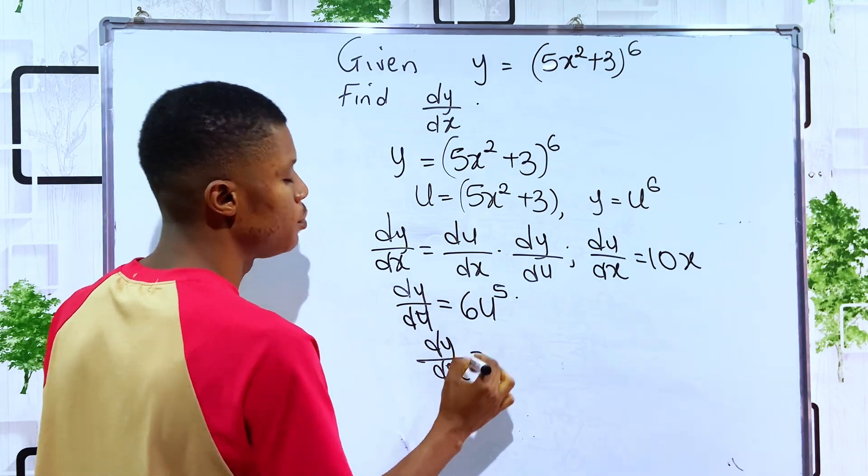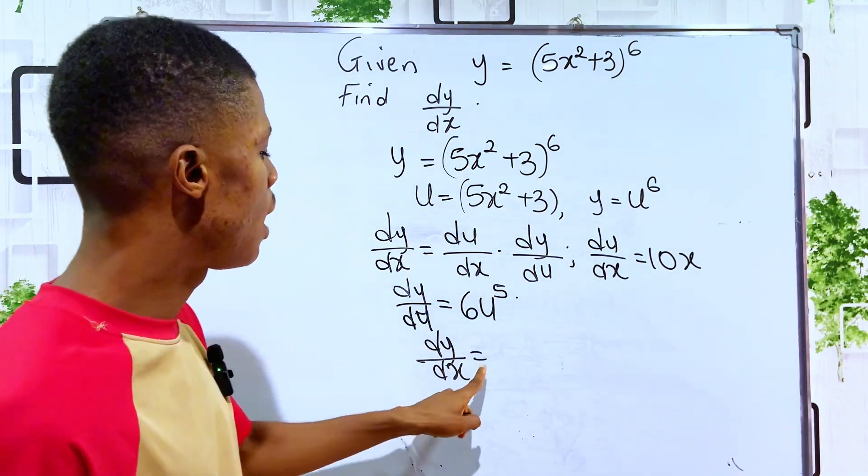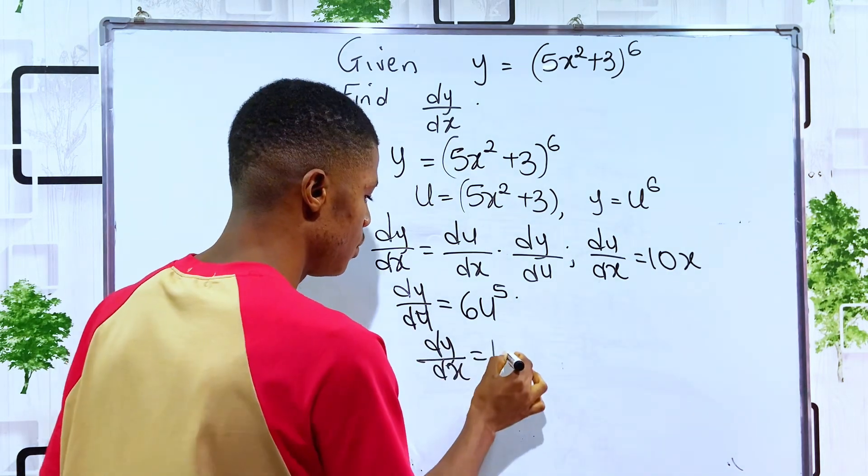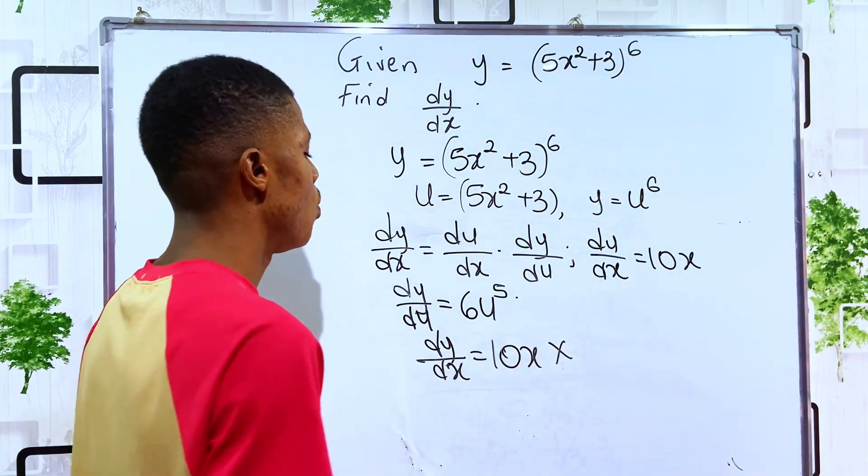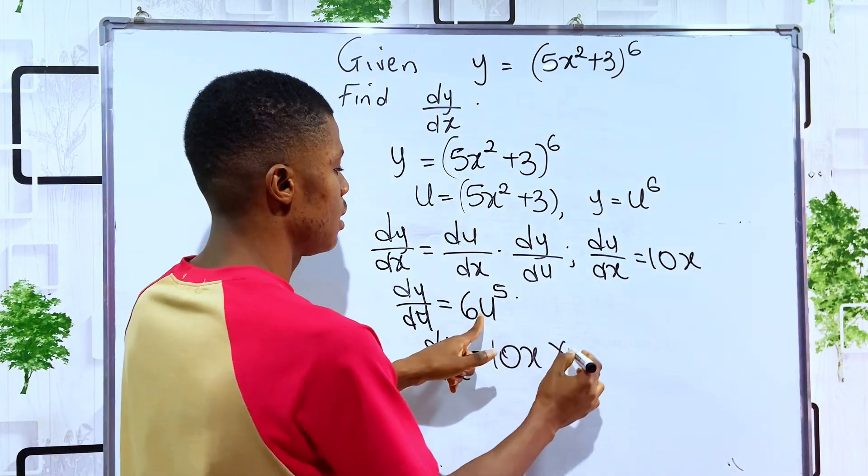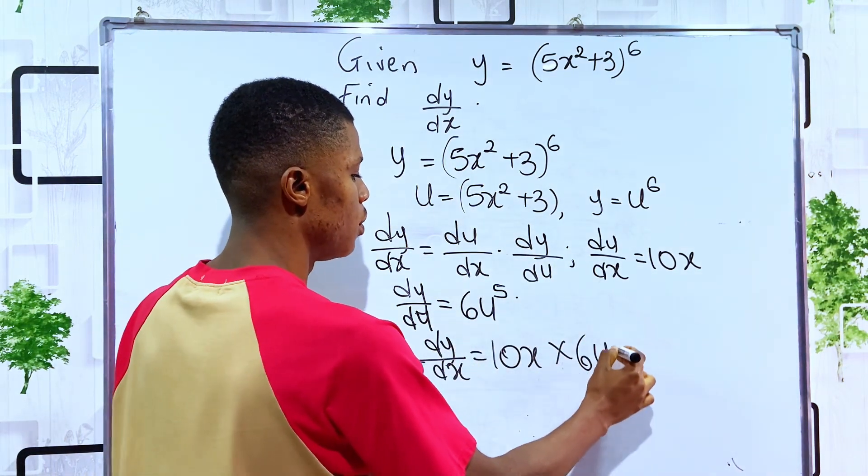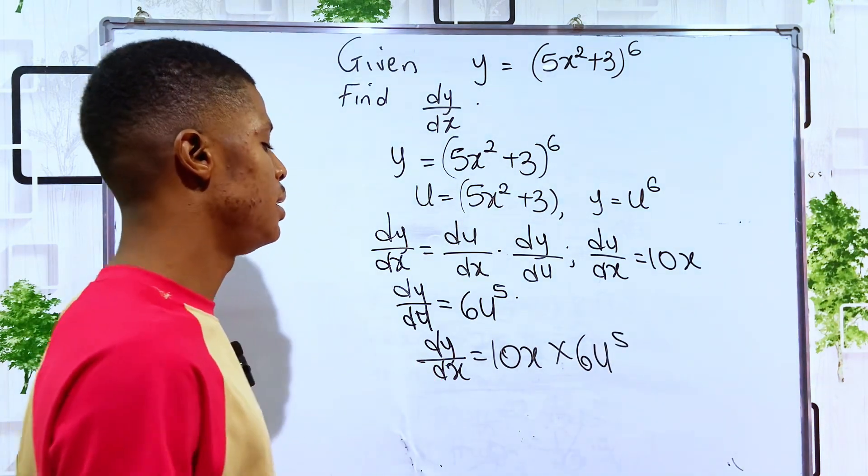So here we can now say that differentiating y with respect to x should be: what is our du/dx? Our du/dx is 10x. We write it as 10x times what is our dy/du: 6u to the fifth power.